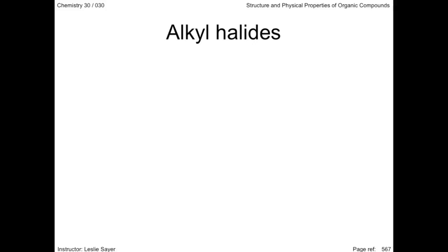A halide is a compound containing an ion of a halogen, and a halogen is an element from group 17 on your periodic table. The physical properties of alkyl halides are very similar to the corresponding alcohol.